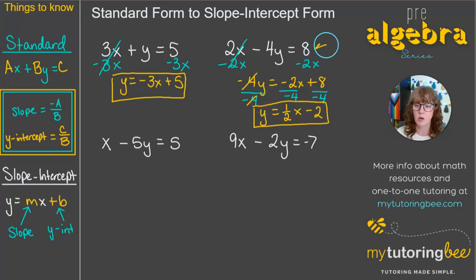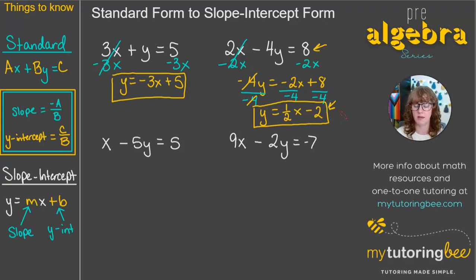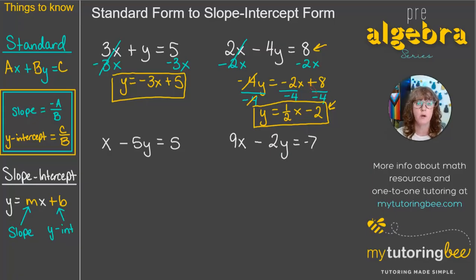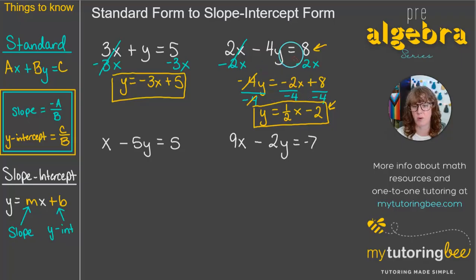Both equations, when graphed, would give the same line. Sometimes there's confusion about whether changing an equation's format changes the line — the answer is no. It's going to give us the same line if we were to graph both forms.